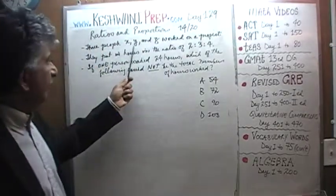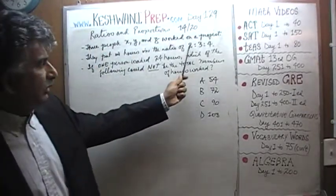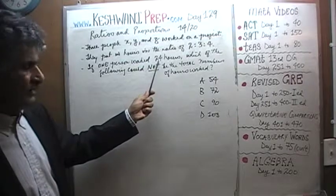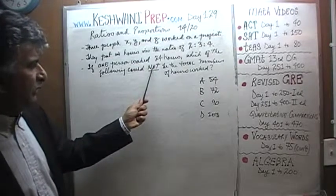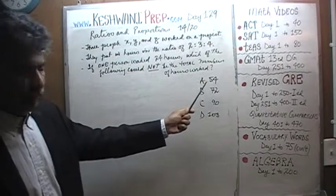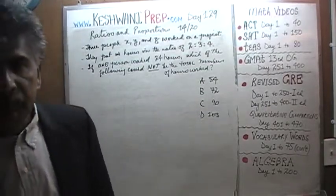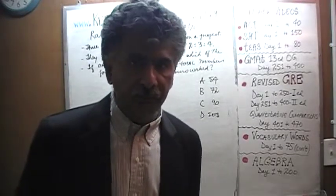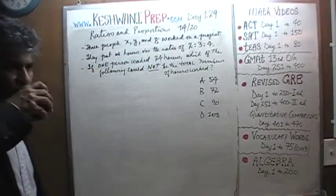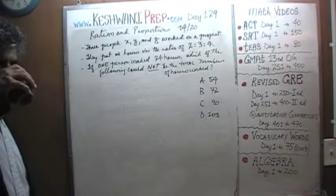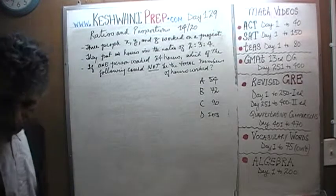But I figured we'll start out with something simple. So one more time, we have three people, X, Y, and Z. We are told that they work in the ratio of 2, 3, 4. One person has worked 24 hours. Based on the fact that one person worked 24 hours, which of the following could not be the total amount of hours worked? 54, 72, 90, and 108. I will give you 5 seconds to pause the video. Make sure that you do it yourself first.